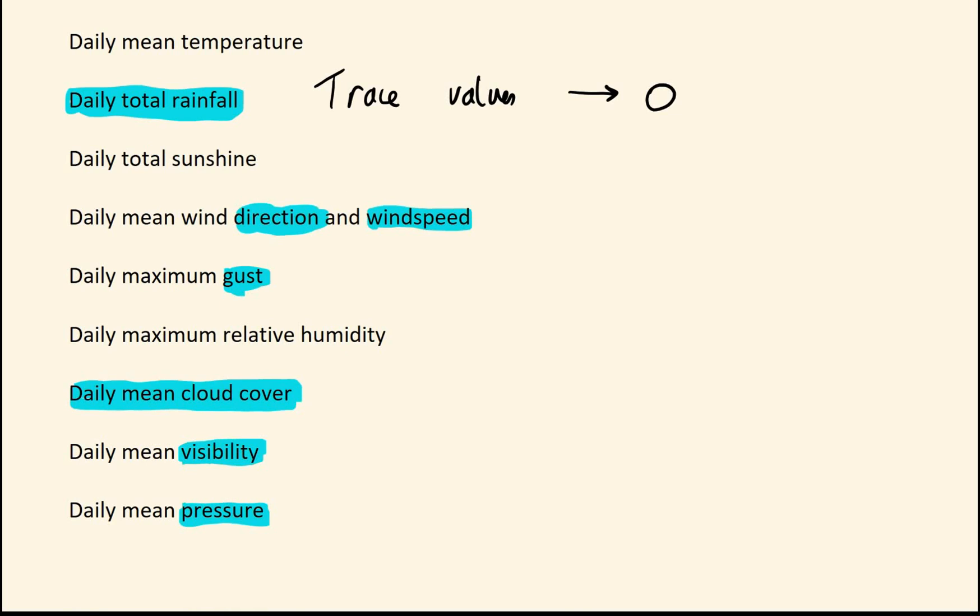We've got daily mean wind direction and wind speed. Direction is given something like northeast north, where they're basically chopping the compass into, I think it's 16 things. So northeast north will be northeast, but then go north again. So that is northeast north. Rarely comes up, but it's worth knowing.